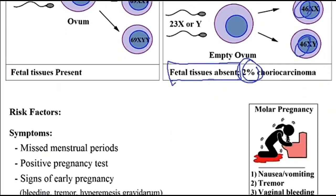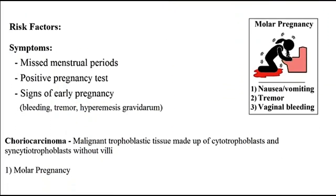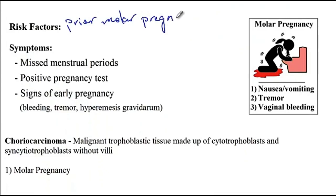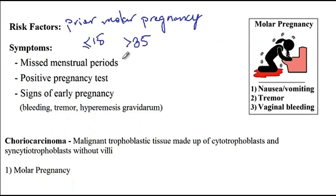As for the risk factors to molar pregnancy, they include prior molar pregnancy, as well as extremes of maternal age — for instance, age of less than 15 years or more than 35. These are the risk factors to the development of molar pregnancy.